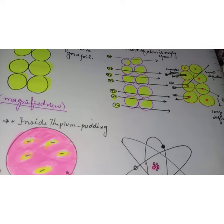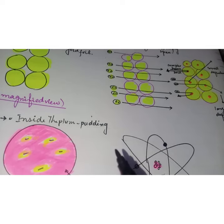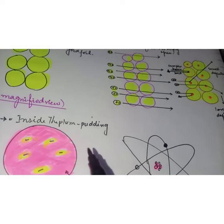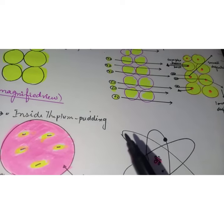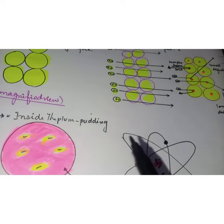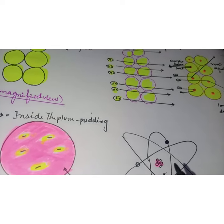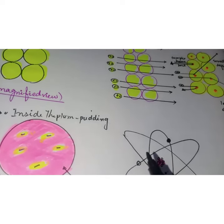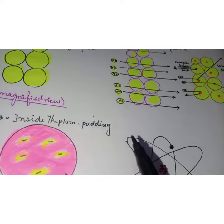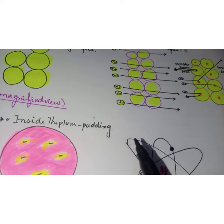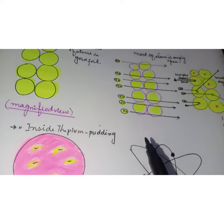Rutherford's model proved to be an important step towards a full understanding of the atom. However, it did not completely address the nature of the electrons and the way in which they occupy the space around the nucleus. It was not until some years later that a full understanding of the electrons was achieved. This proved to be a key to understanding the chemical properties of the elements.